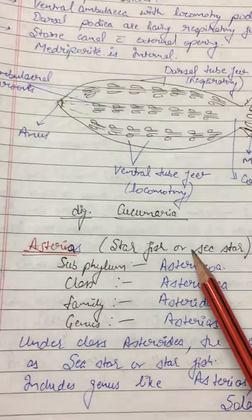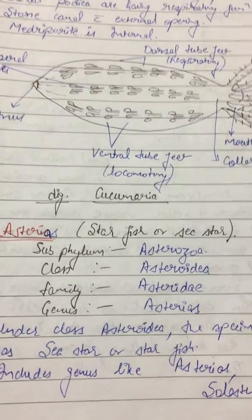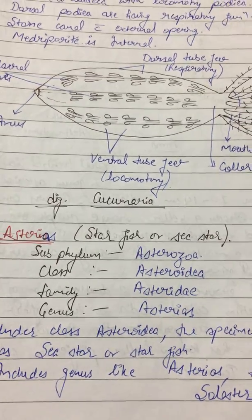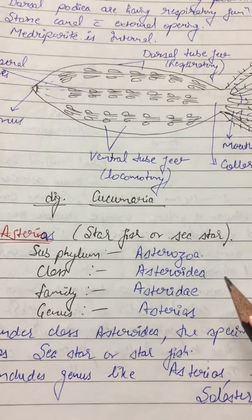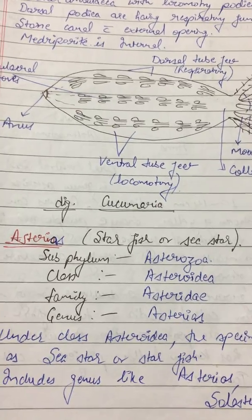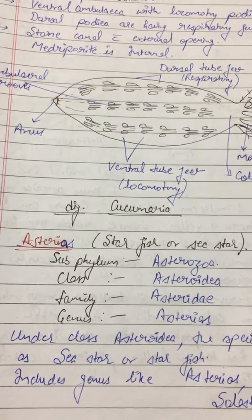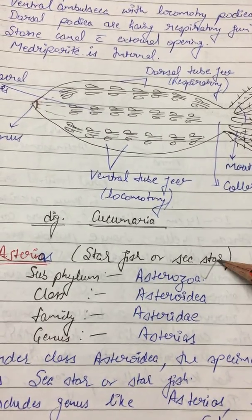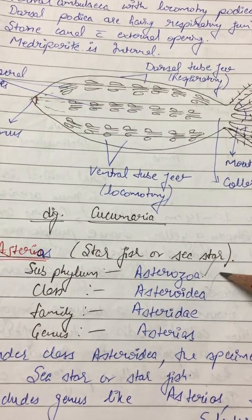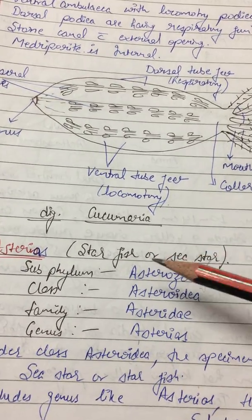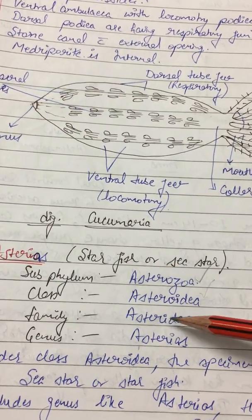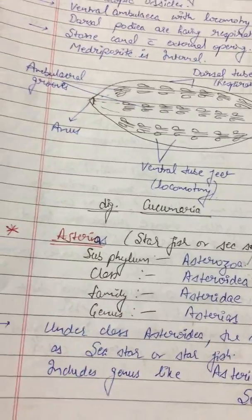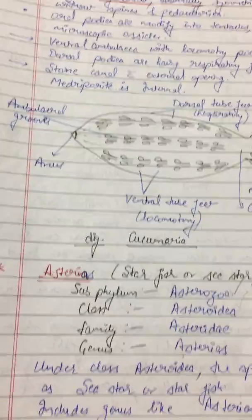Asterias, the starfish, belongs to phylum Echinodermata, subphylum Asterozoa, class Asteroidea, family Asteriidae, and genus Asterias. As a memory tip: '-zoa' is for subphylum, '-oidea' is for class, and '-idae' is for family. Keep revising these so they are remembered.